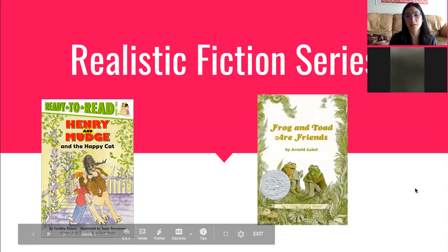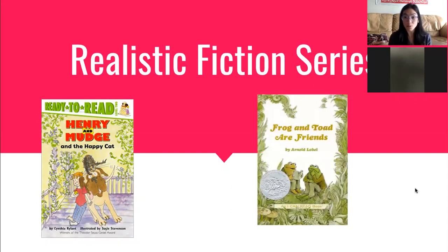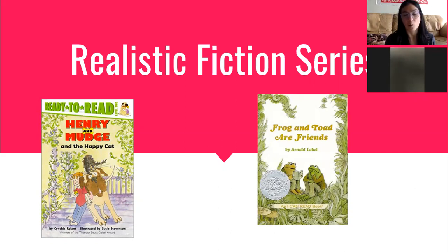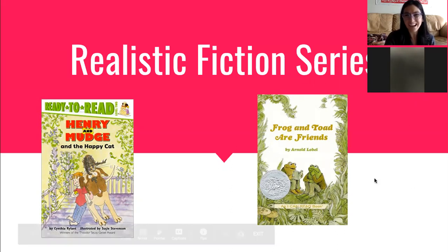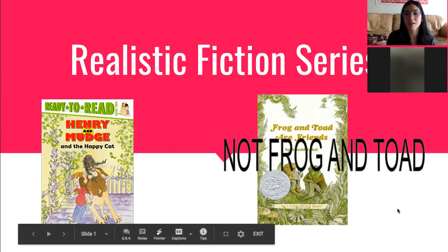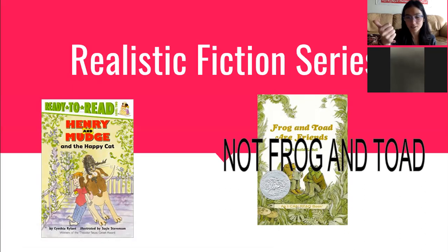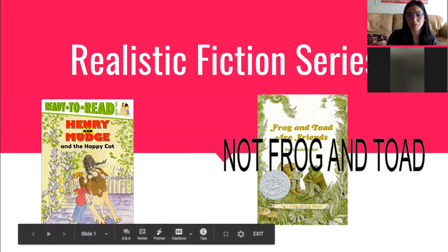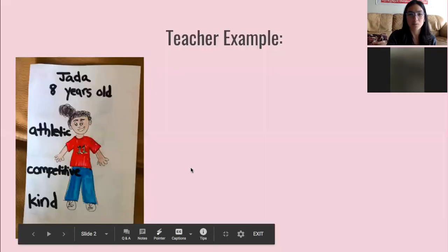Now another example of a series book that we've read is Frog and Toad. While this is a series because we can follow these two characters in different adventures, it's not realistic. Frog and Toad can talk like people and they wear clothes like people. We know that's not how animals behave in real life.